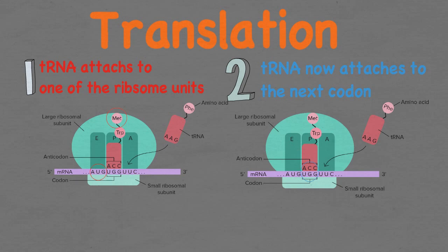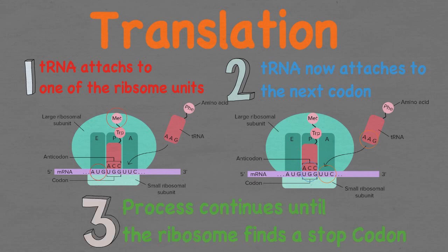Each tRNA carries an amino acid, which is bound together at the catalytic site in an attempt to create a peptide chain. The mRNA shifts over another codon to the right, and the same thing happens — tRNA binds to its codon UUC with its anti-codon AAG, and another peptide bond forms between the two amino acids. The ribosome will continue this process, slowly moving down the mRNA strand until it finds a stop codon. The subunits then detach and the polypeptide chain moves down the endoplasmic reticulum for further processing.